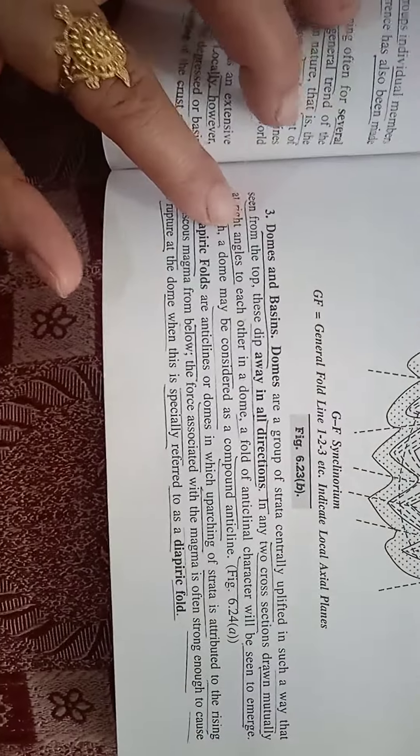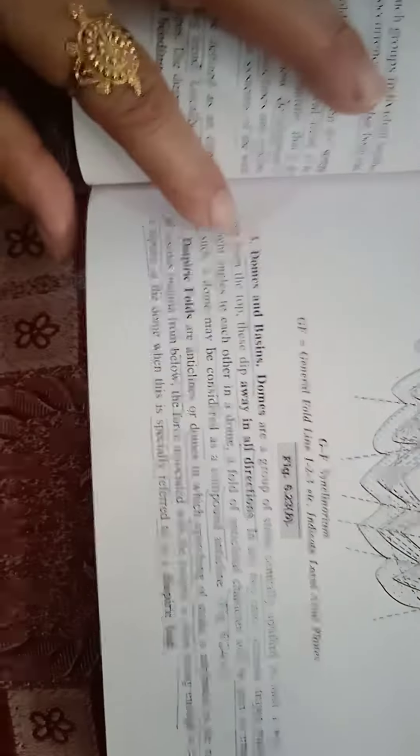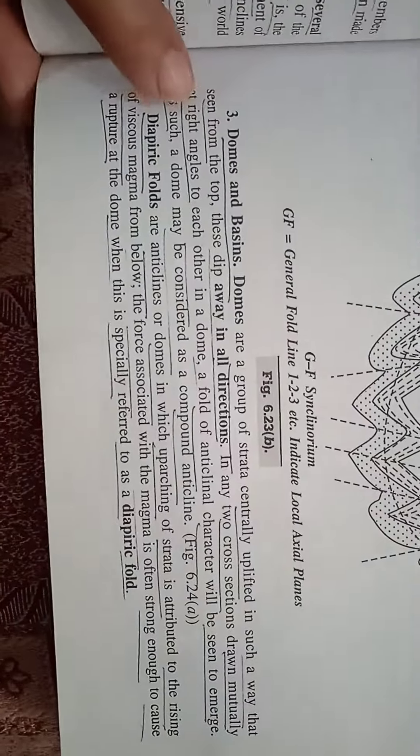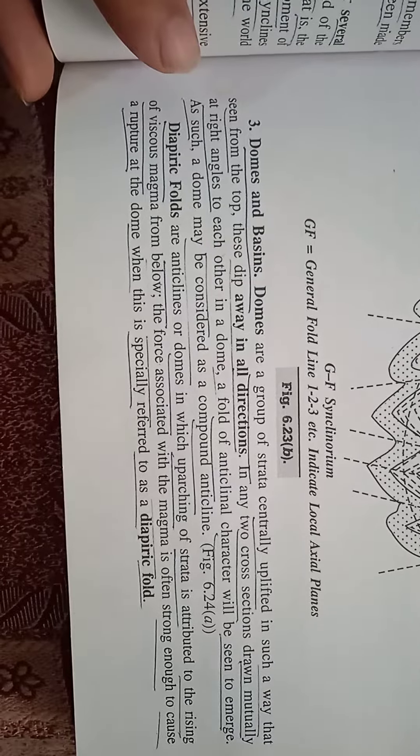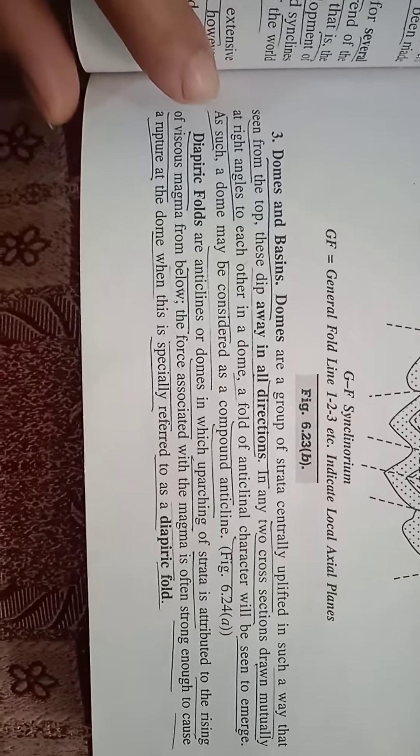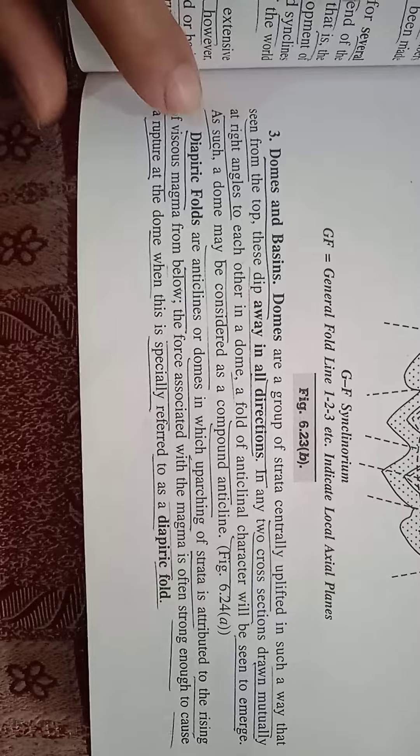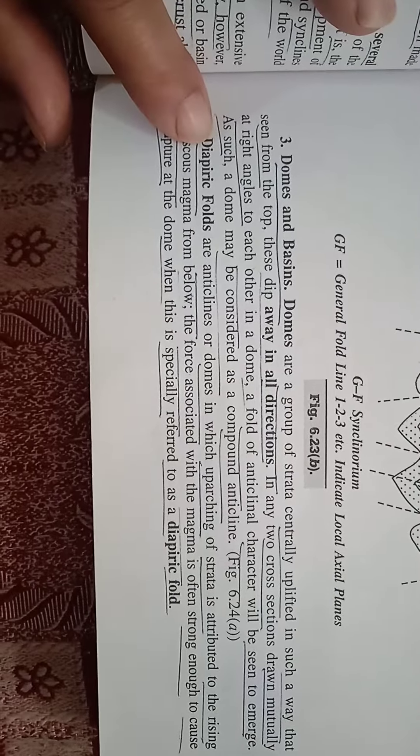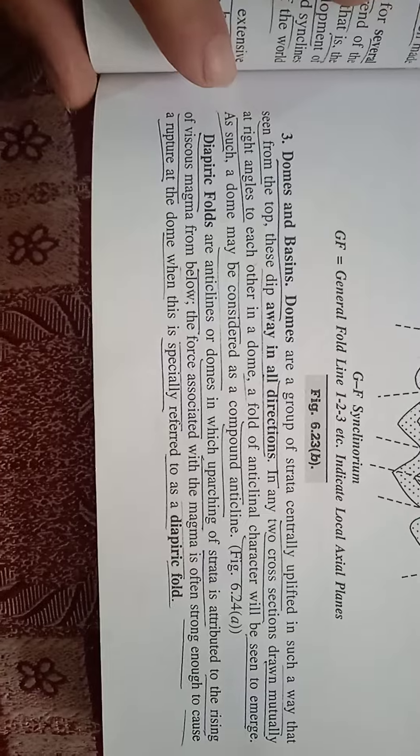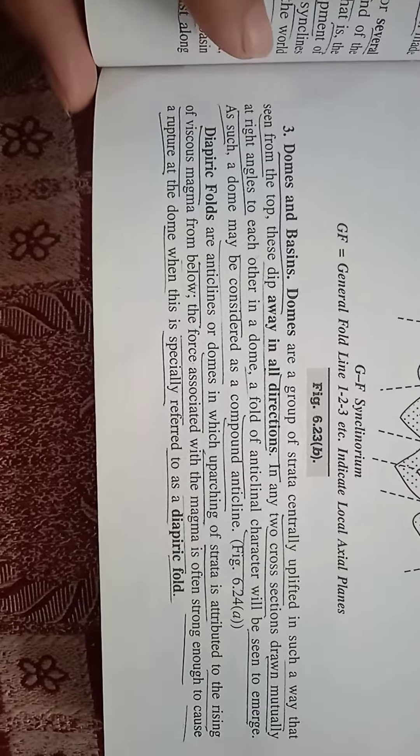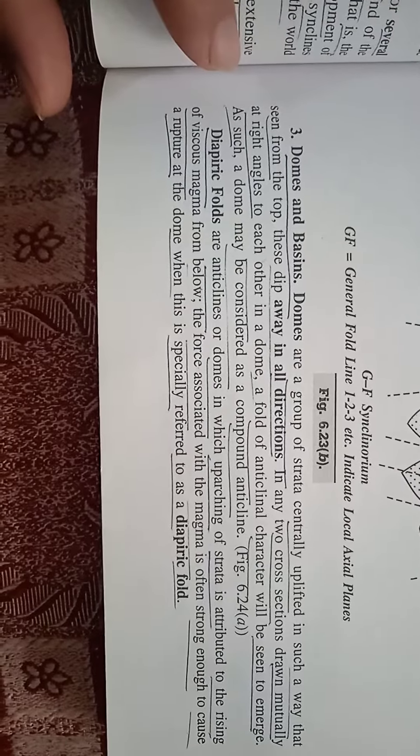Structural Features of Rocks: Domes and Basins. Domes are a group of strata centrally uplifted in such a way that seen from the top, these dip away in all directions. In any two cross sections drawn mutually at right angles to each other in domes, folds of anticlinal character will be seen. As such, domes may be considered as compound anticlines.